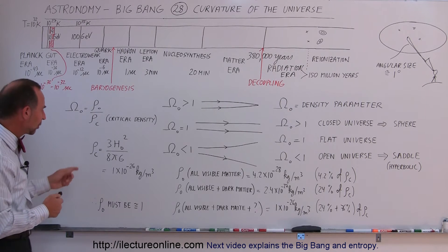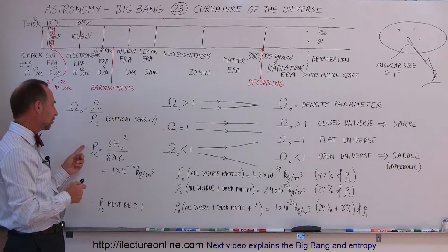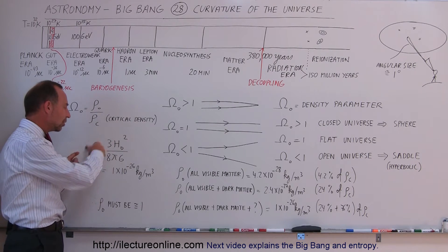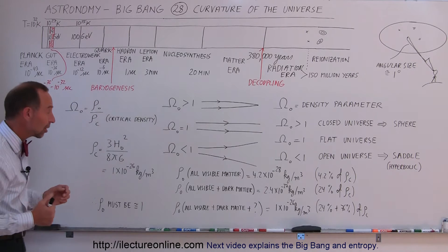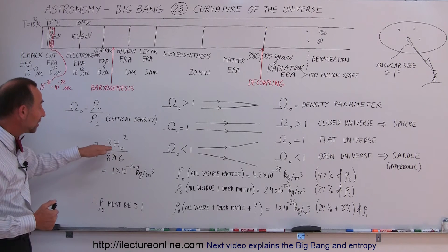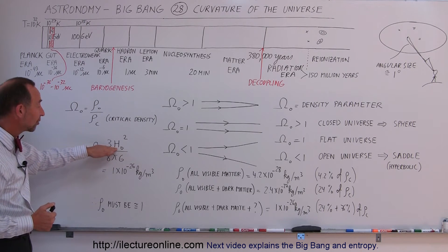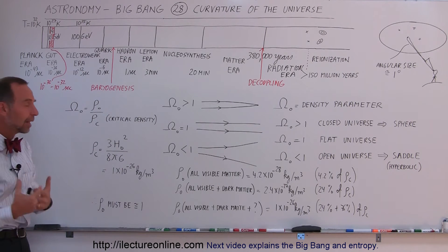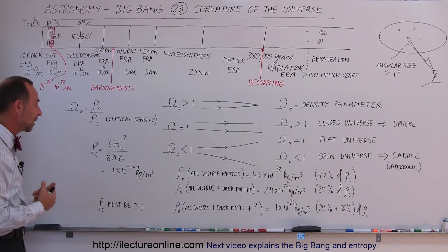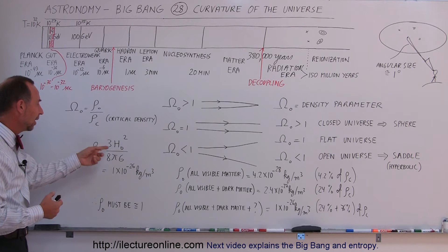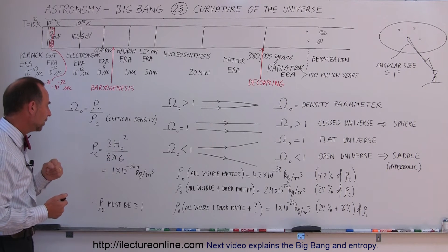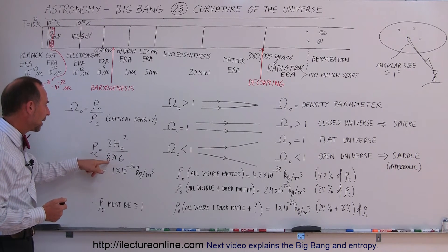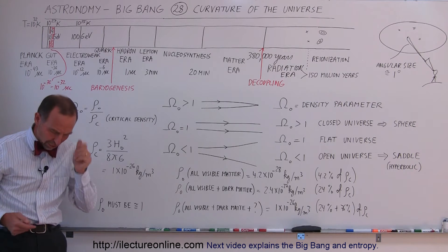It turns out the critical density is equal to three times the Hubble constant squared — the Hubble constant is now about 73 kilometers per second per megaparsec — divided by 8 pi G.